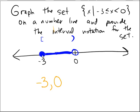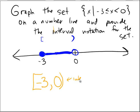Is negative 3 included? Yes, it was a closed dot, so in interval notation we use a bracket. And do I include the number 0? No, that one's an open dot, so I use the parentheses. And this is called the interval notation.